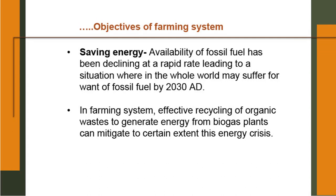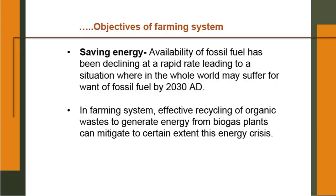Saving energy: availability of fossil fuel has been declining at a rapid rate, leading to a situation where the whole world may suffer for want of fossil fuel by 2030 AD. Even today there is a crisis of fuel everywhere — petrol, diesel prices are increasing. We need some alternative sources of energy. In the farming system, effective recycling of organic waste can generate energy. For example, if you have a biogas plant, you can get biogas that can be used to light lamps or cook food in the farmer's family.